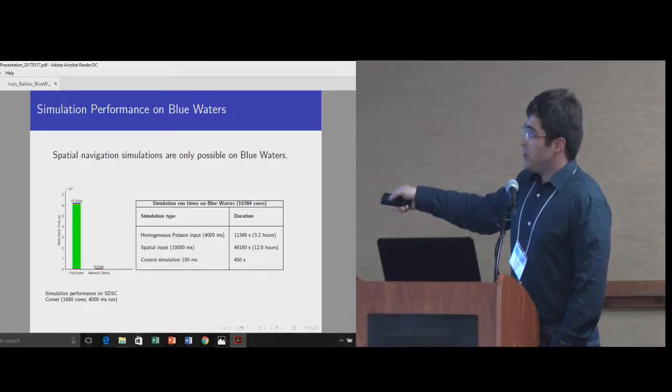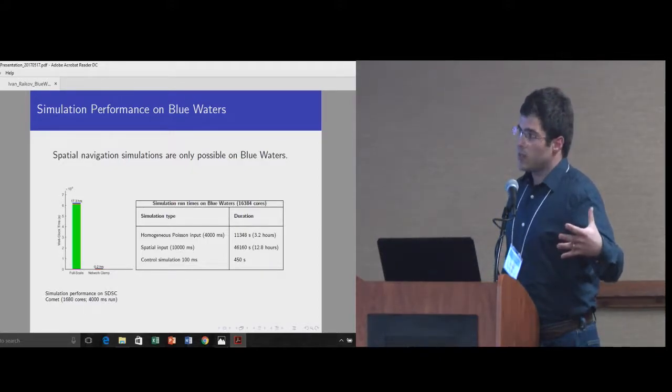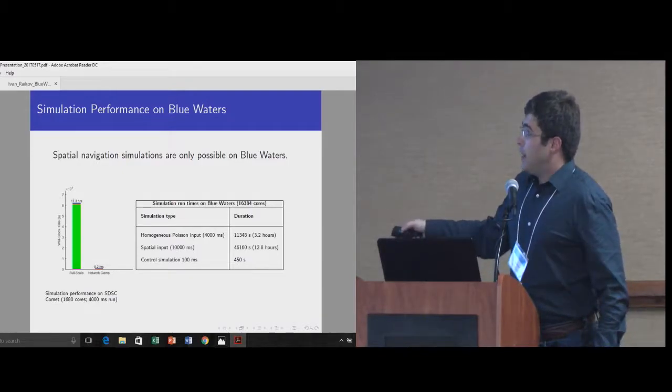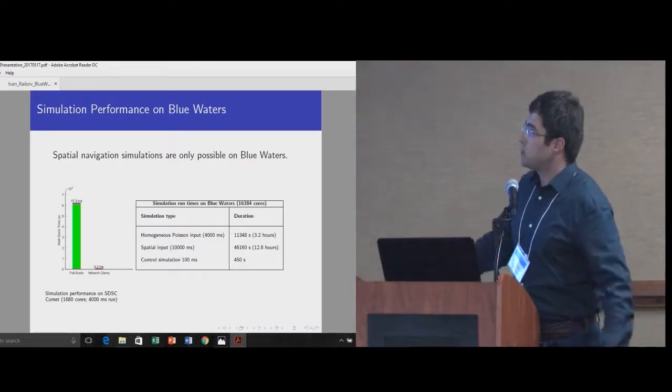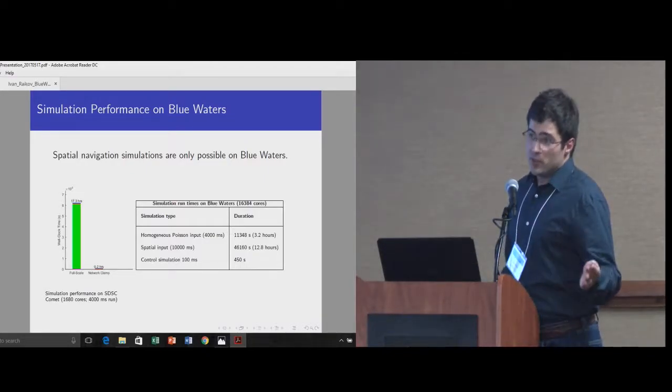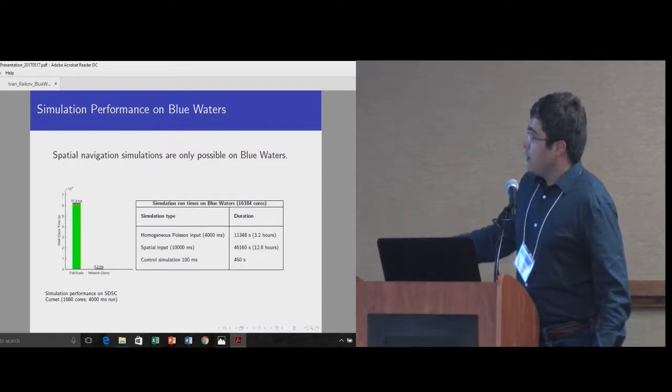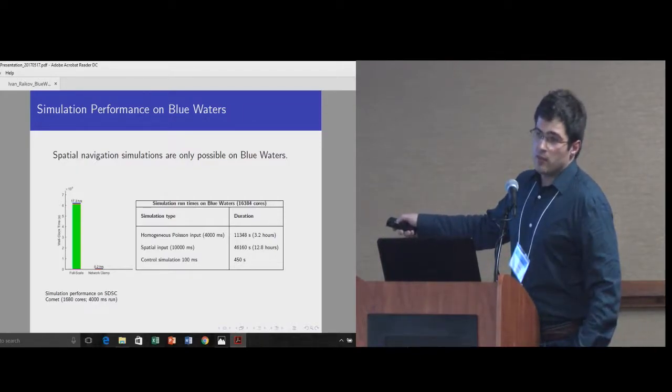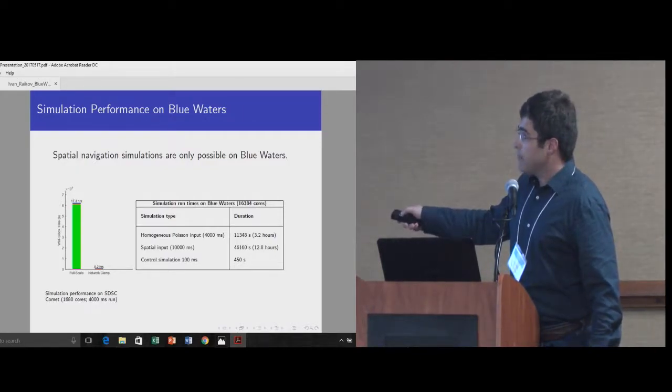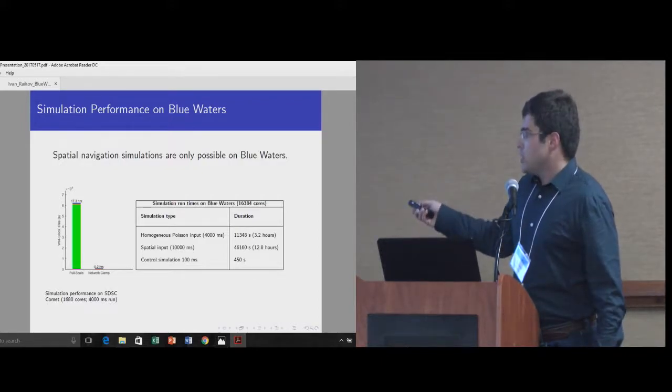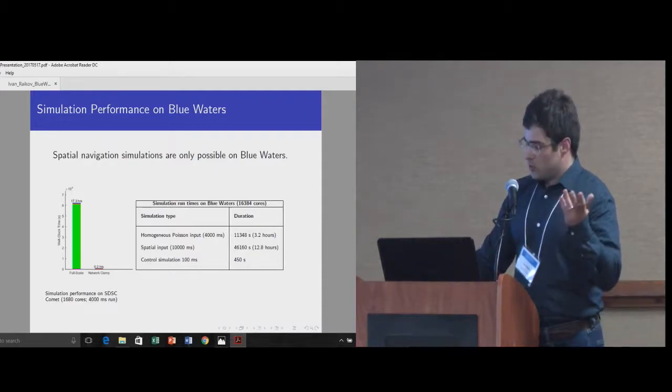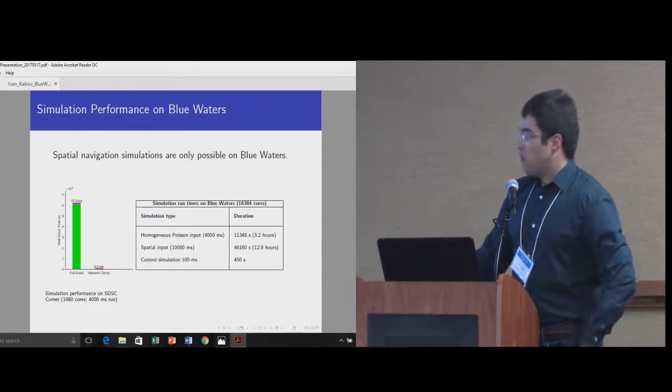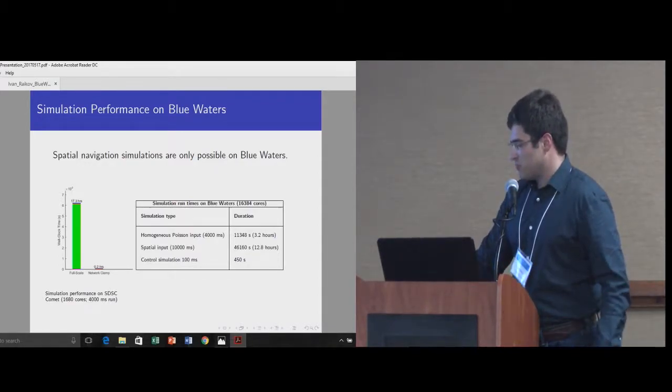Most importantly, the actual realistic, spatial realistic simulations, they need to be much longer because to simulate the animal, we need at least 10 seconds of physical time simulation. That is only possible on Blue Waters currently. It takes 12 hours to simulate 10 seconds of physical time, which is, it's long, but it's okay, and we can always increase the number of cores. So this really has made possible some really interesting work.